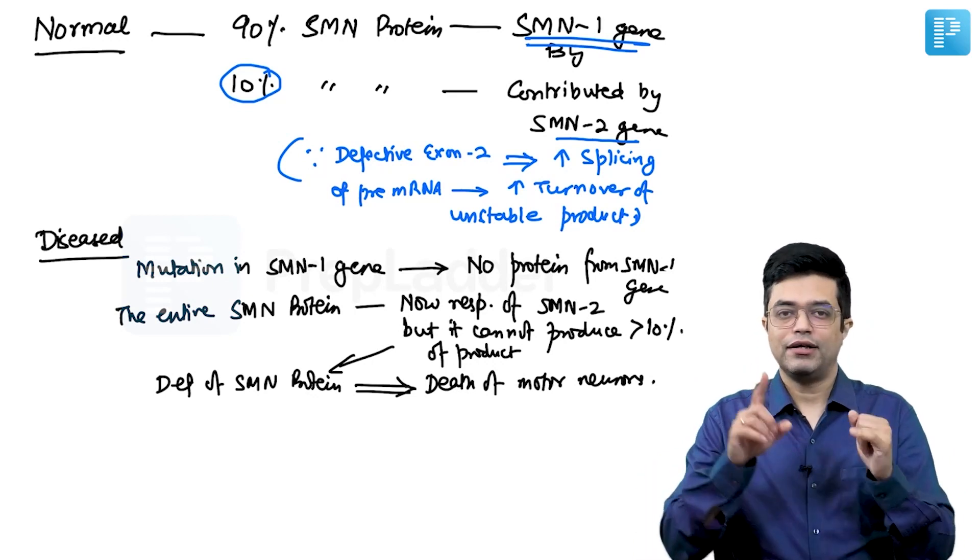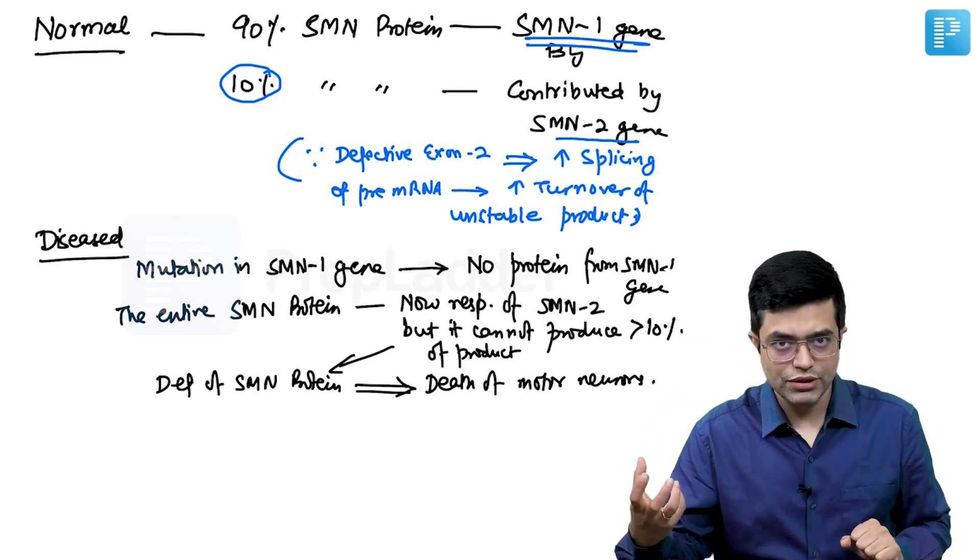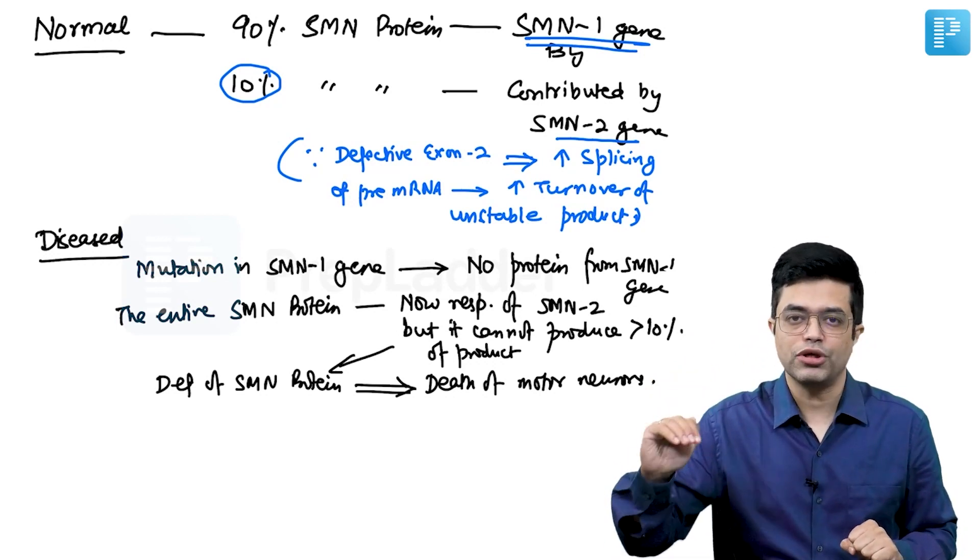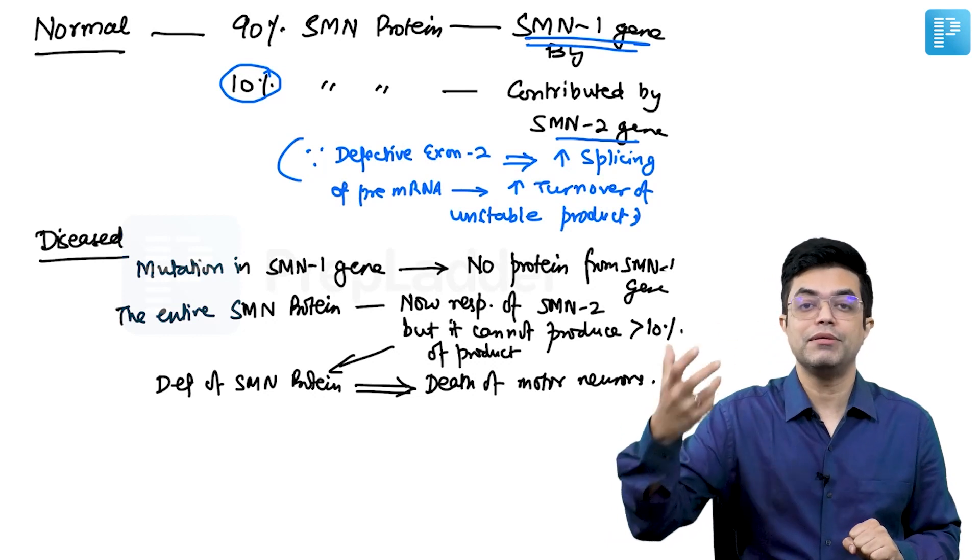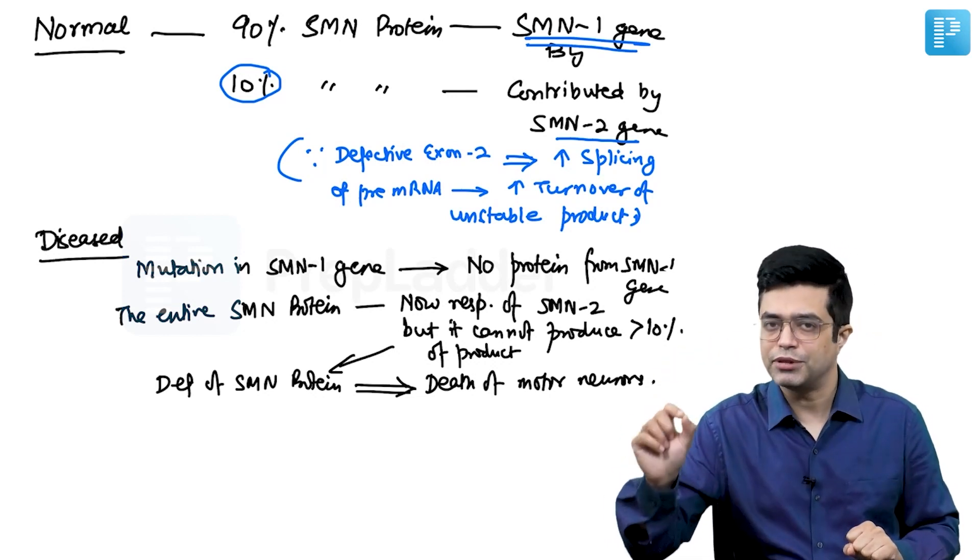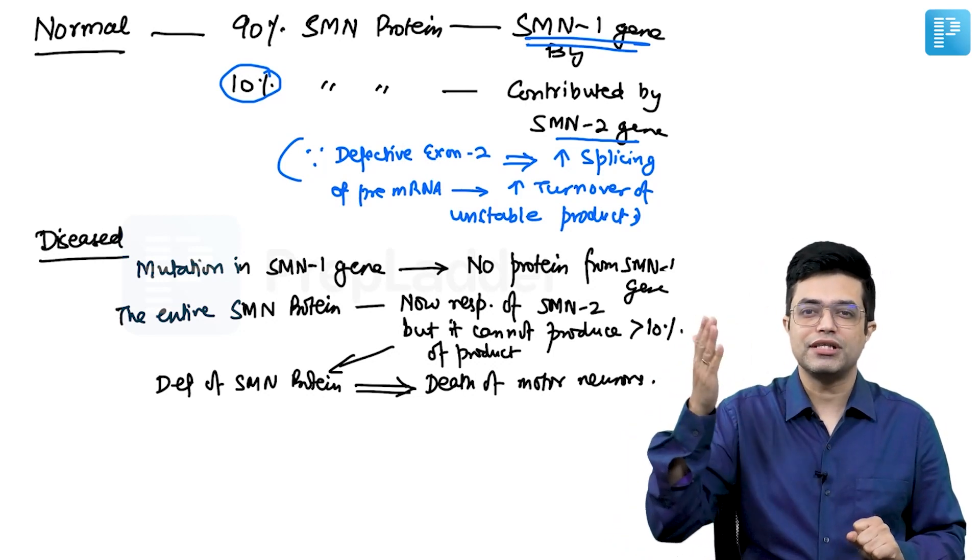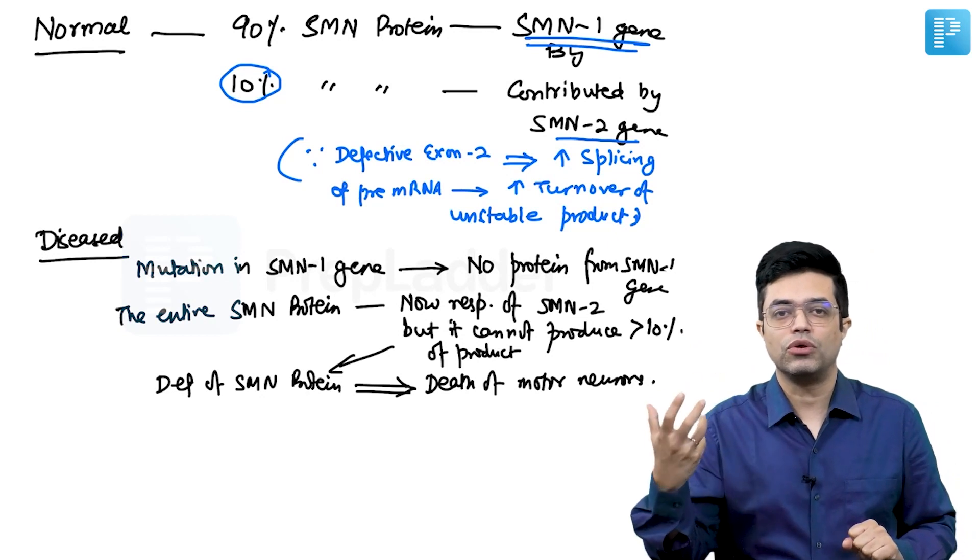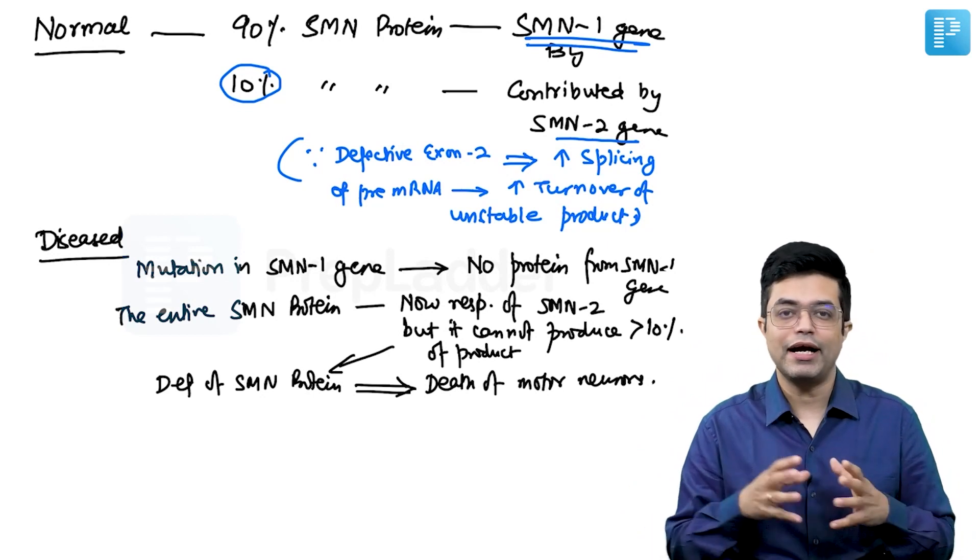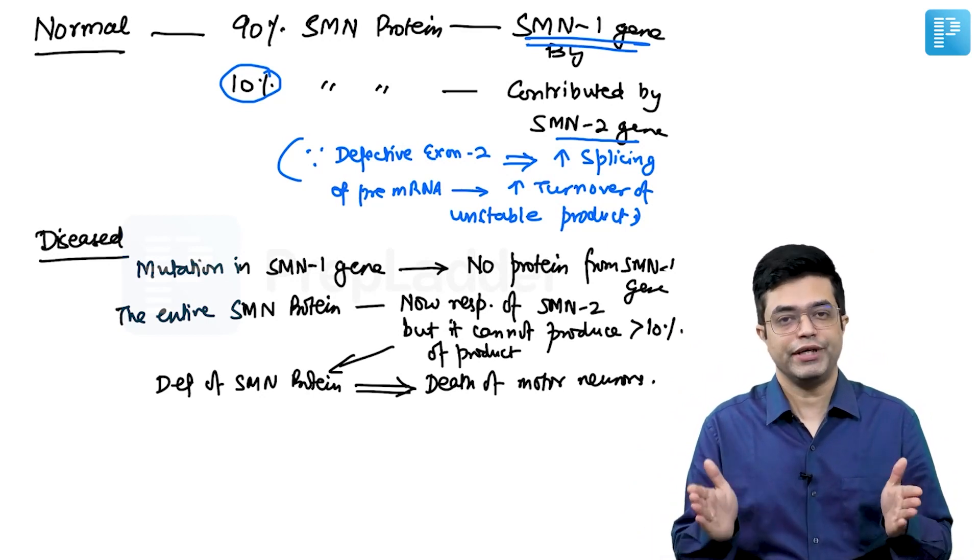To summarize, SMN1 prevents death of spinal motor neurons. This contributes, the protein form is protective for the motor neurons. SMN1 forms 90% of that protein. SMN2, sister protein forms only 10%. When SMN1 gets mutated, the protein formation drastically reduces, the anterior motor horn cells tend to die. SMN2 itself cannot compensate for that, and so there is progressive motor neuron loss leading to progressive muscle weakness.